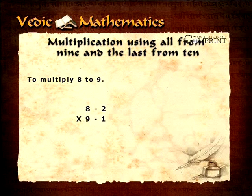Set down as shown here and the complements from the base 10 are written alongside. The minus signs indicate that 8 is 2 less than 10 and 9 is 1 less than 10. The answer is obtained in two parts and to distinguish these a diagonal stroke is placed in the middle of the answer line. The right-hand part of the answer is found by multiplying the two complements, that is 2 multiplied by 1 equals 2.